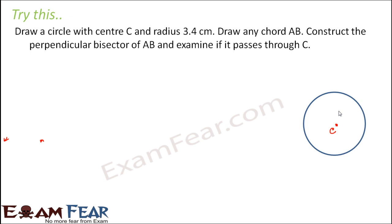Now we need to draw any chord AB. A chord is any line segment that connects two points on the circle. So we draw a line segment joining any two points on the circle and name it AB. Now we need to construct the perpendicular bisector of AB and examine if it passes through C.